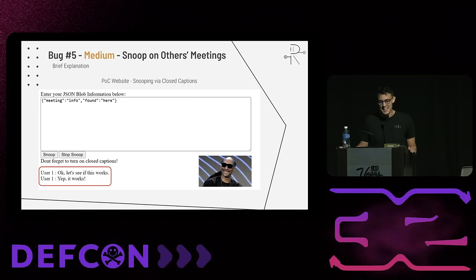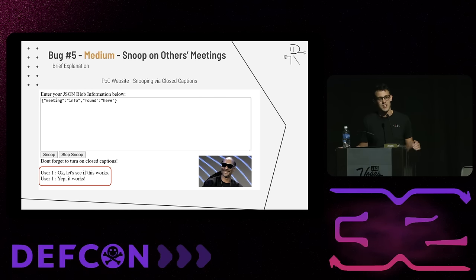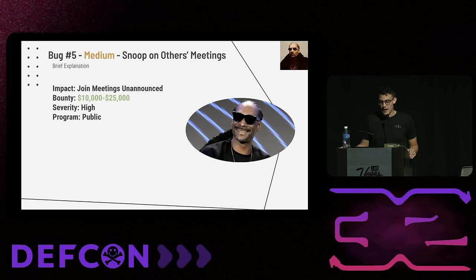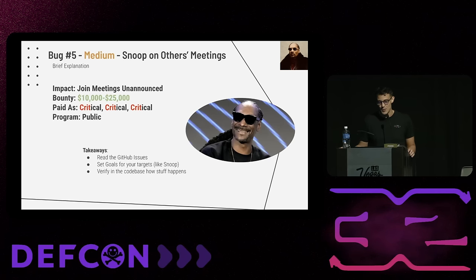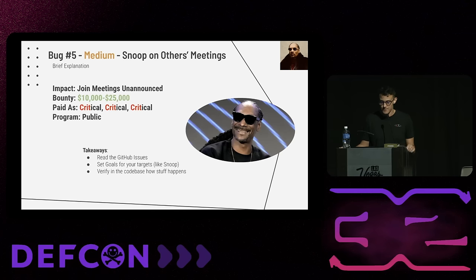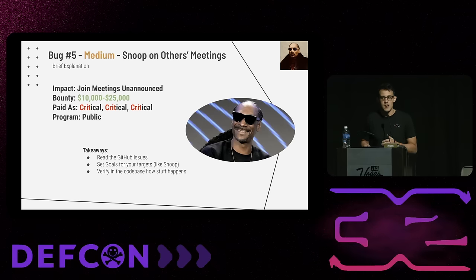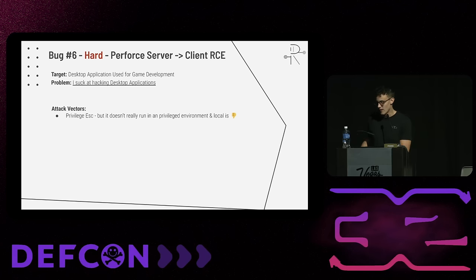The Snoop Dogg POC — the triagers loved it. You paste in the meeting information, click Snoop, and it exfiltrates the user's transcripts while not appearing in the participant list. That was a 20 to 25K bounty, technically high but paid as critical given the bonuses. Public program. Takeaways: reading GitHub issues can have massive dividends, especially anything related to security or privacy. Set goals for your target — like being able to snoop on meetings — and verify in the codebase how it works, especially on the client side.